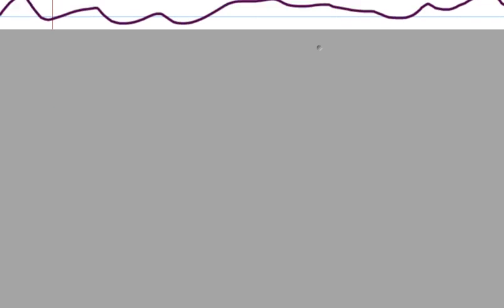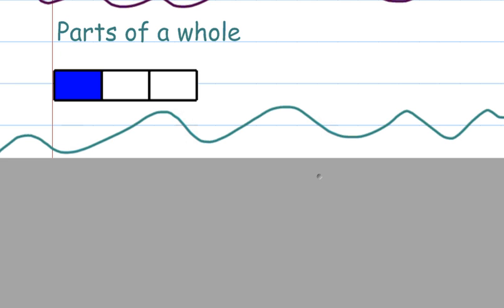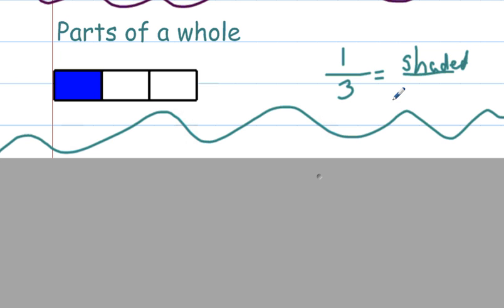Let's scroll down to our next section. If you need to pause, you can. So let's look at this — we see the parts of the whole. Let's see what part is shaded. Here we have one part shaded, and then the total number of blocks making up a whole unit. This is the whole right here — one section whole, and there are three parts in total. So there is one shaded over a total of three sections that make up a whole unit.